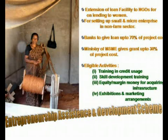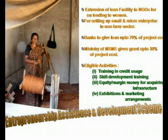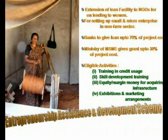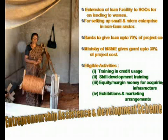Similarly, for the development of women, an Entrepreneurship Assistance and Development Scheme has been floated, where extension of loan facility to NGOs for on-lending to women is provided for setting up small and micro enterprises in the non-farm sector. Banks give loans up to 70% of the project cost. The Ministry of MSME gives grants up to 30% of the project cost. Eligible activities are training in credit usage, skill development training, equity margin money for acquiring infrastructure, and exhibitions and marketing arrangement.